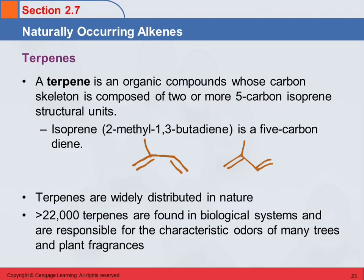So that's isoprene. You can connect isoprene units together to form larger molecules, and those are called terpenes. There are over 22,000 terpenes found in biological systems. The characteristic odors of many trees and plants, the smell of flowers — many of these are terpenes.